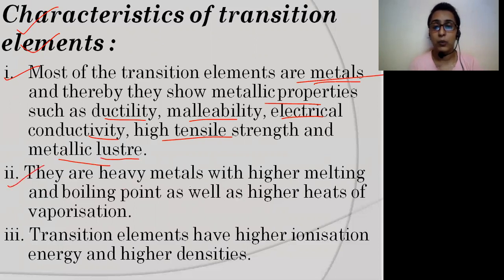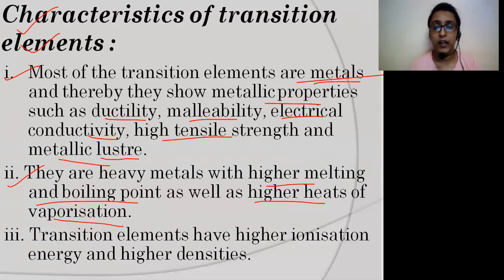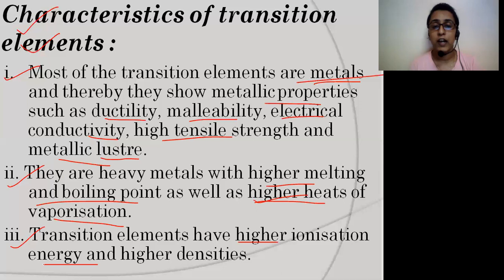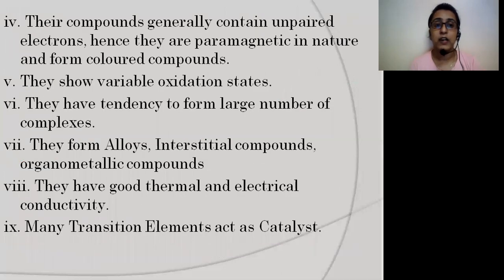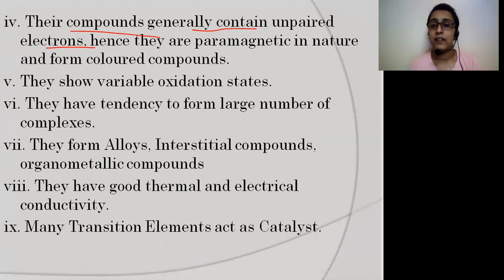Second, they are heavy metals with higher melting point and boiling point, as well as high heat of vaporization. Third, transition elements have higher ionization energy and higher density. Fourth, their compounds generally contain unpaired electrons.